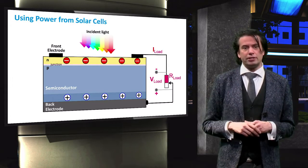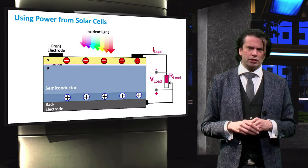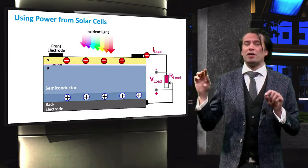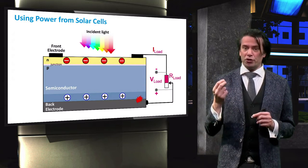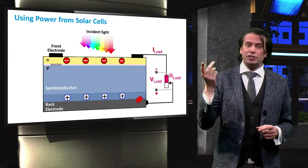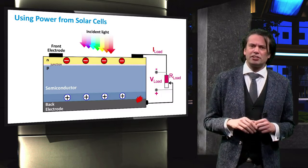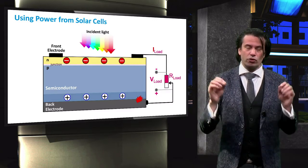If an external circuit is applied between these electrodes, electrons will flow from the N-type materials towards the P-type material. There is now a current flowing from a high potential to a low potential, which is the definition of electrical power.